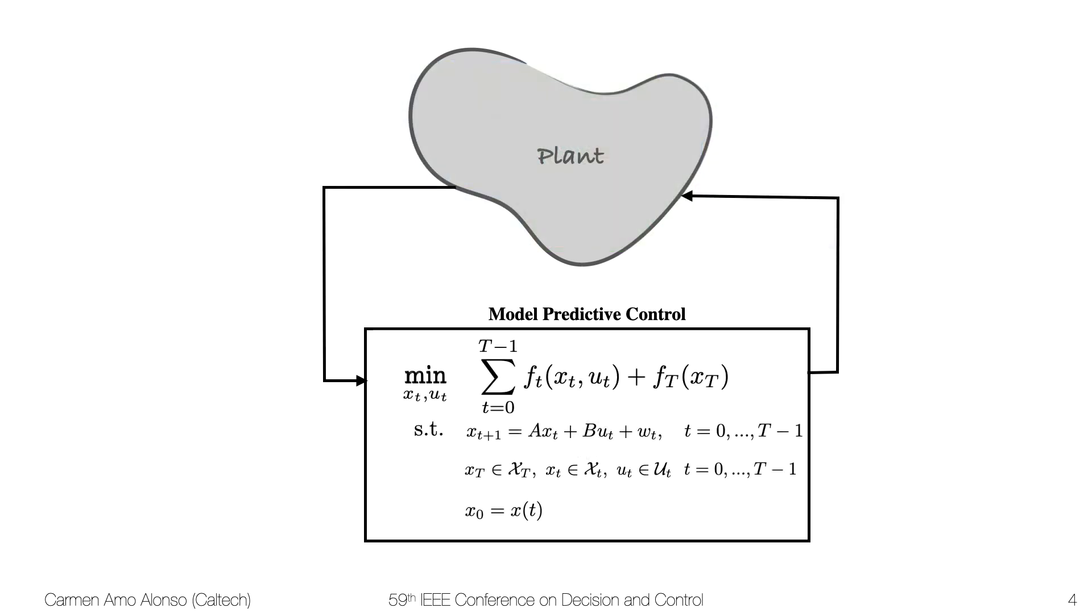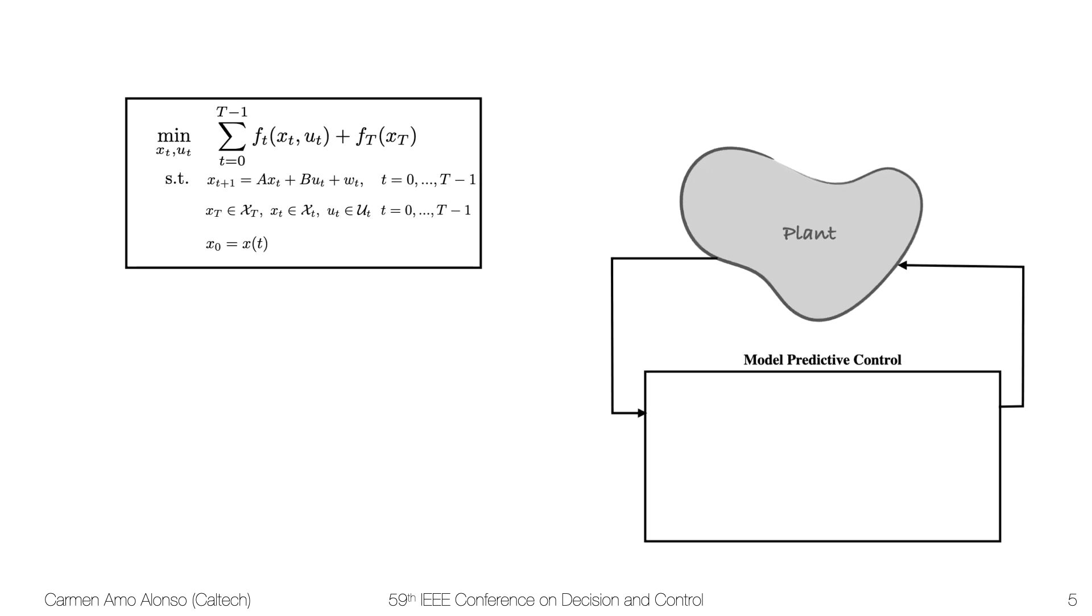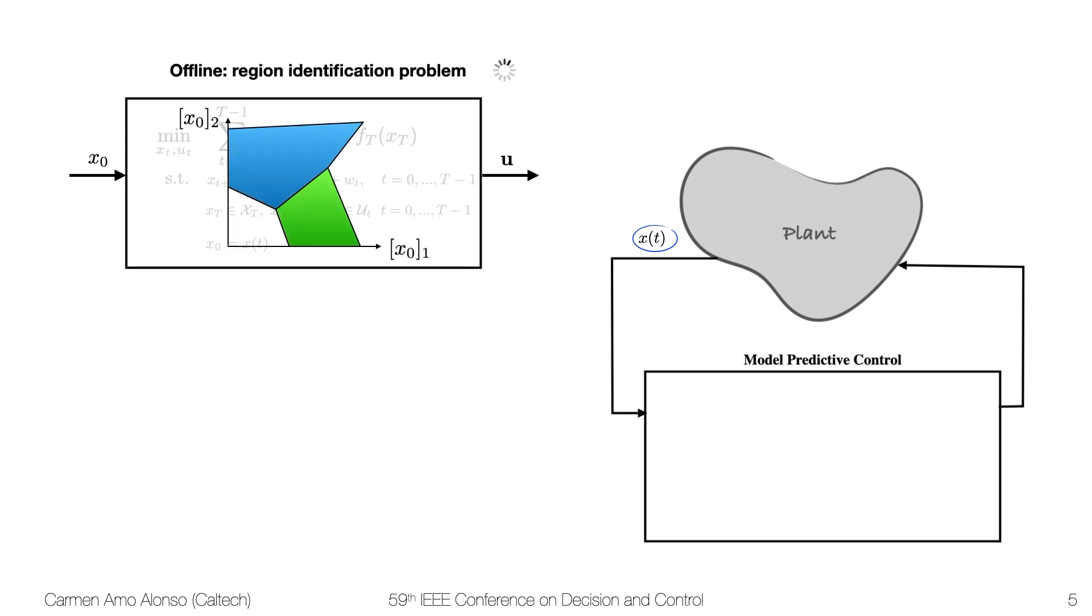And here is where explicit MPC comes into play, because it splits the MPC problem into two parts. It is based on the observation that in the optimal control problem the only thing that changes every iteration is the initial condition. So we can see this optimal control problem as an implicit map between the initial condition and the control input. So the idea is to make this map explicit. It has been shown that for quadratic programs the control input is a piecewise affine function of the initial condition.